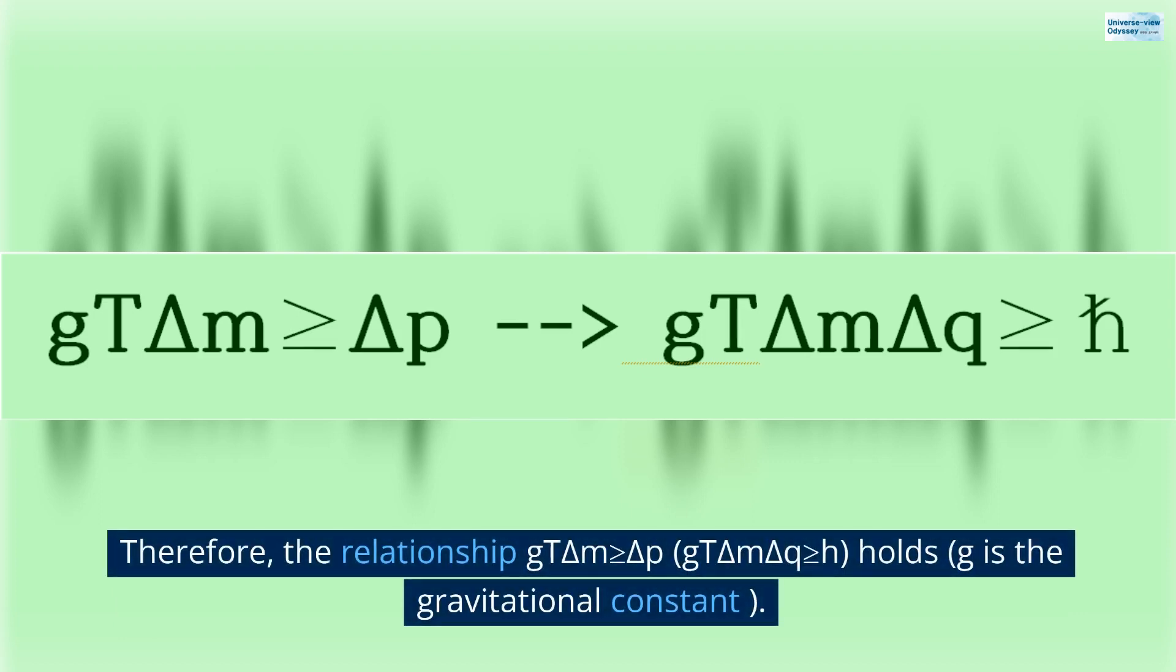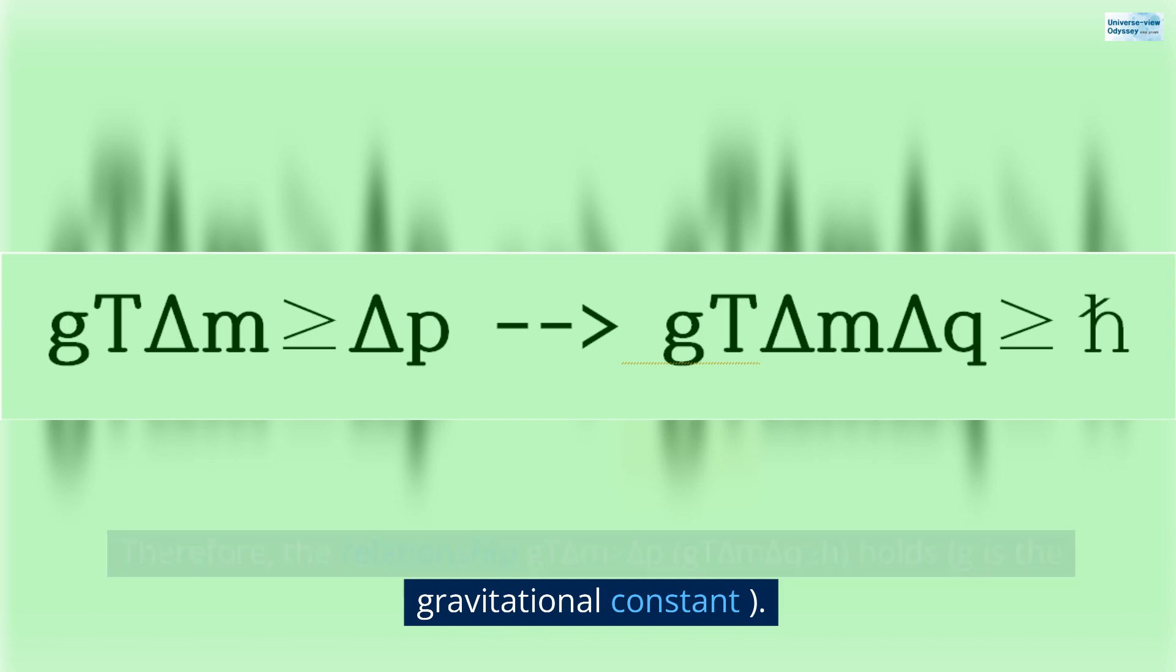Therefore, the relationship G T delta M is greater than or equal to delta P. G T delta M delta Q is greater than or equal to H, holds. G is the gravitational constant. This is where Bohr's final blow comes in.